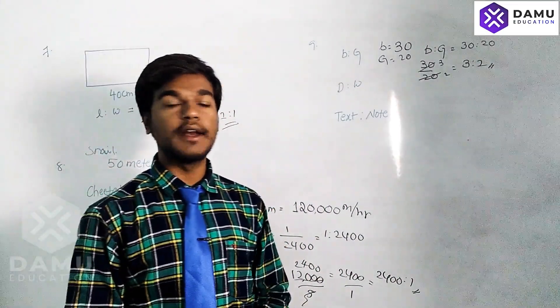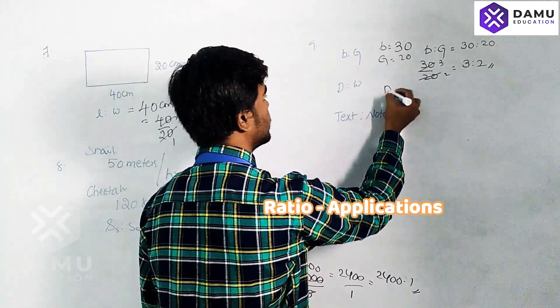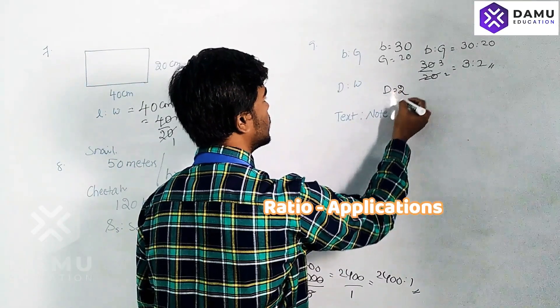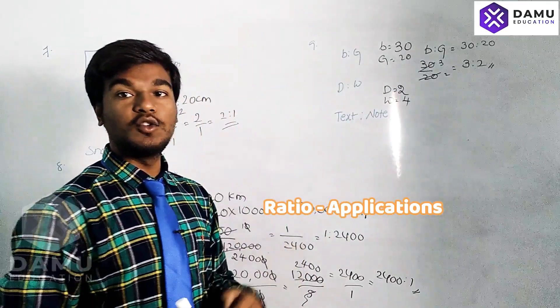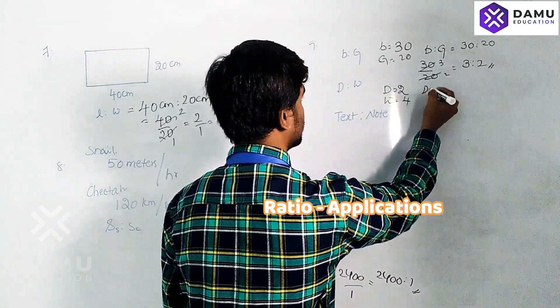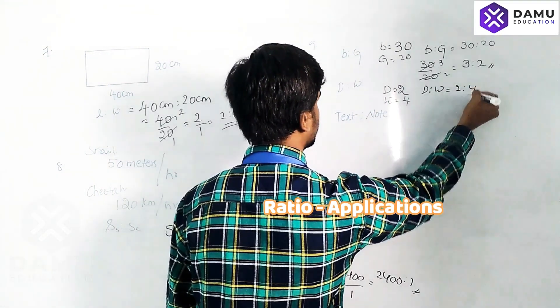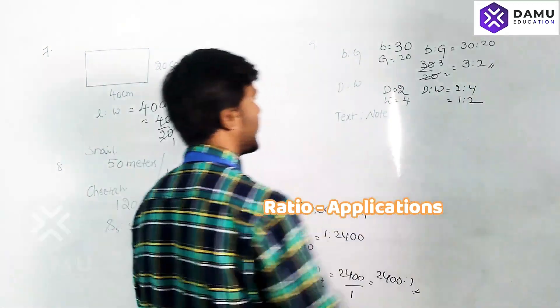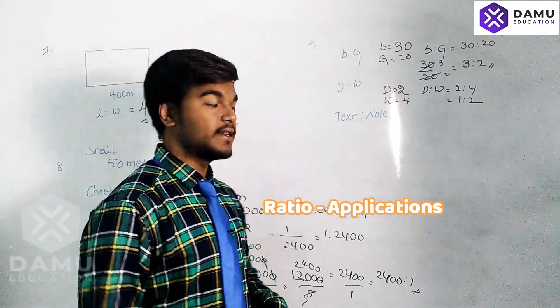Number of doors to number of windows. The door to windows ratio, D to W, is 2 to 4. That is 1 is to 2.